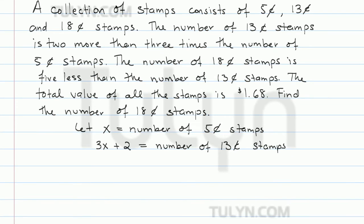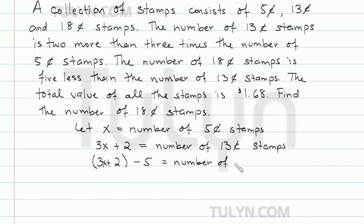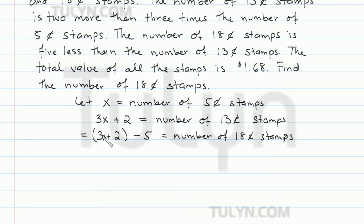We know the number of 18 cent stamps is 5 less than the number of 13 cent stamps. So it's going to be 5 less than 3x plus 2, which gives us 3x plus 2 minus 5. And simplifying, this becomes 3x minus 3. So that is the number of 18 cent stamps.